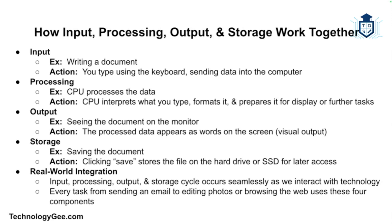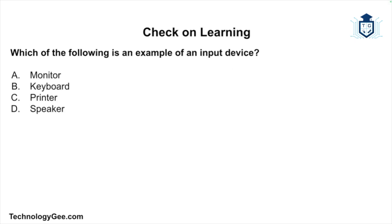This cycle of input, processing, output, and storage happens constantly and seamlessly as we interact with computers — whether you're sending an email, editing a photo, or browsing the web. These four basic components are at the heart of the computer. Now let's go into our check on learning to see if you're comprehending this information.